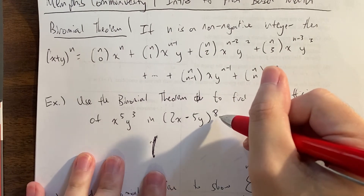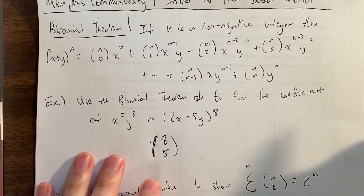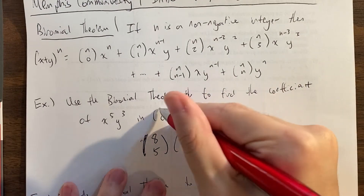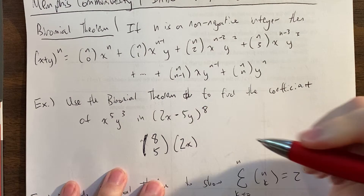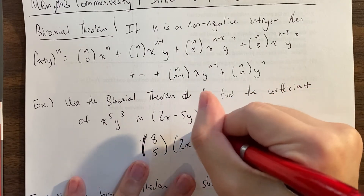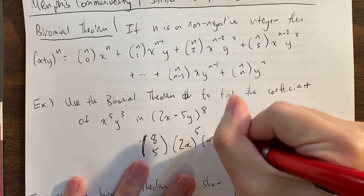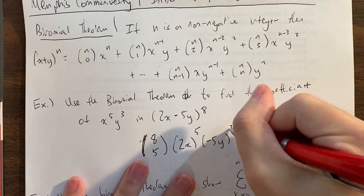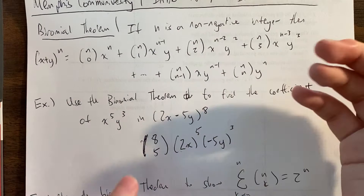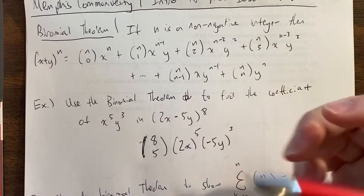So we're going to write 8 choose 5, or equivalently 8 choose 3 — remember from our last video that 8 choose 5 and 8 choose 3 are the same thing. Then we take the first term, which is 2x — the 2 is also part of the x, so when you raise this to the 5th, the 2 is also being raised to the 5th. Finally, it'll be (minus 5y) to the 3rd. This is the term for x to the 5th, y cubed — so much easier than expanding everything out.